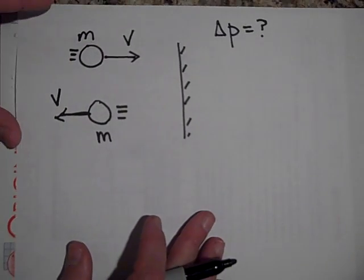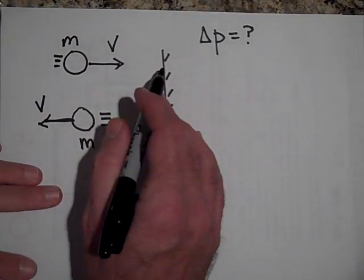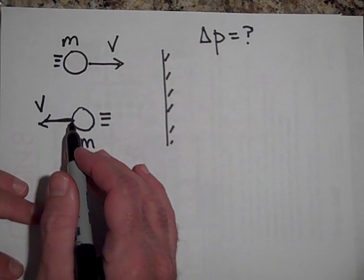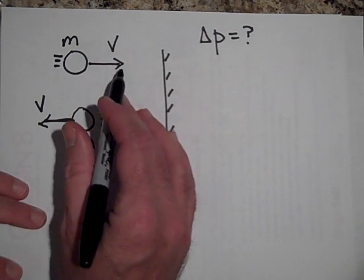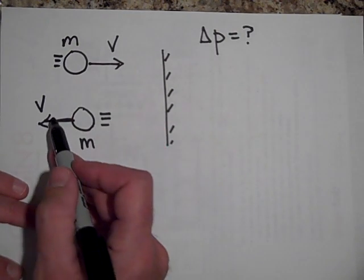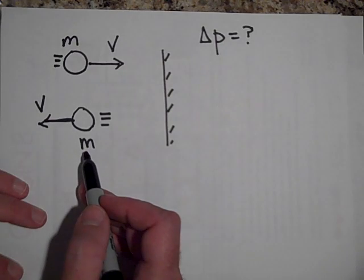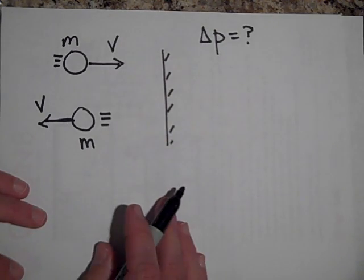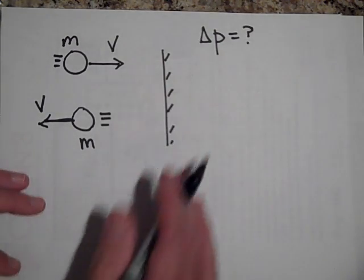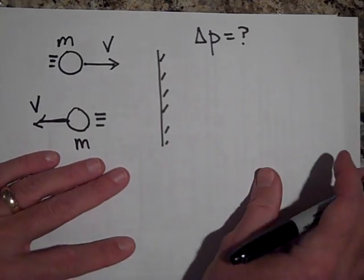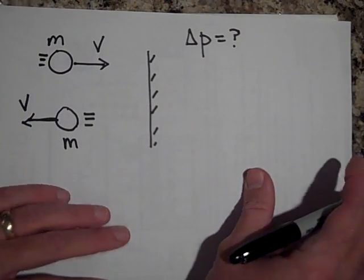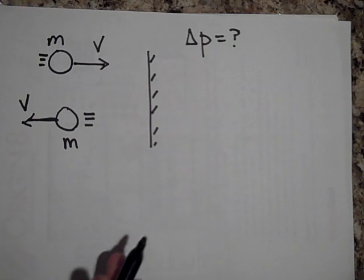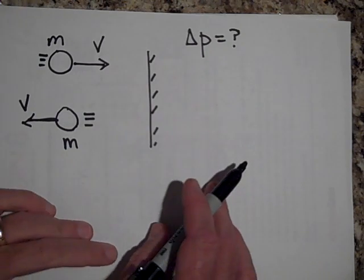Here's a ball heading toward a wall. It hits the wall, ricochets off, and comes back. It was going with speed v and it comes back with speed v — same ball, just bounced off the wall. What's the change in momentum? Go ahead and see if you can figure it out in terms of m and v.